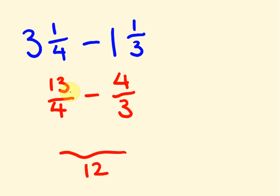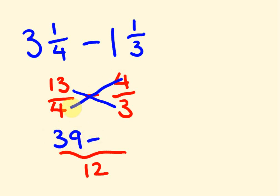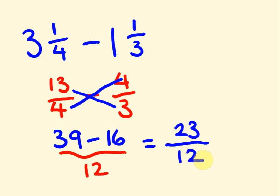To get the bottom number, three times four is twelve. Again we start at the top left — this is where minus is really important because it actually matters what takes away what; it affects our answer. So thirteen times three is thirty-nine. Put the minus there, then four times four is sixteen. That equals thirty-nine take away sixteen, which is twenty-three. And this goes over twelve. Twenty-three divided by twelve goes once with eleven left over, so the answer is one and eleven twelfths.